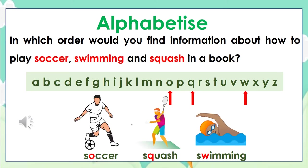In which order would you find information about soccer, swimming, and squash in a book? Again, we go with step number two — looking at the second letters — and we would find soccer, squash, and swimming.